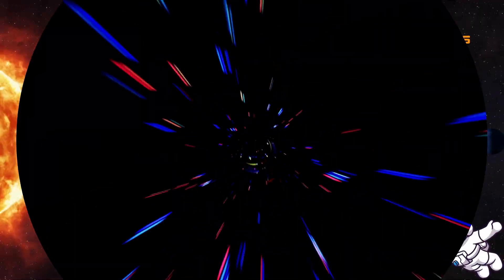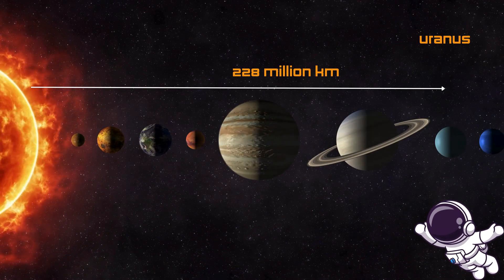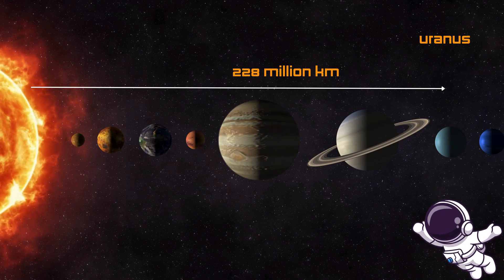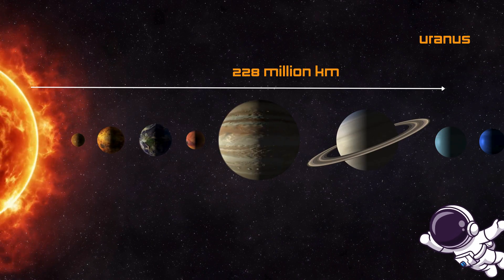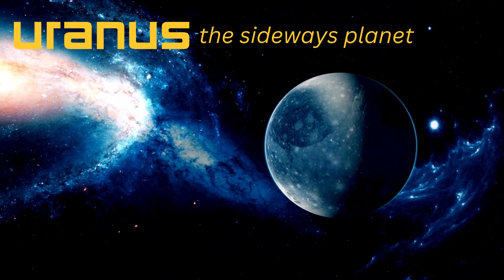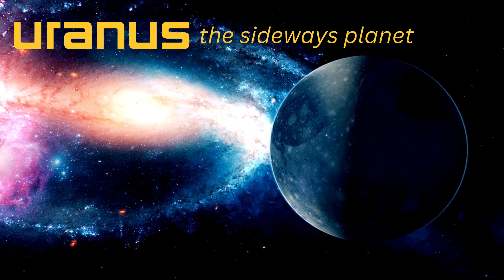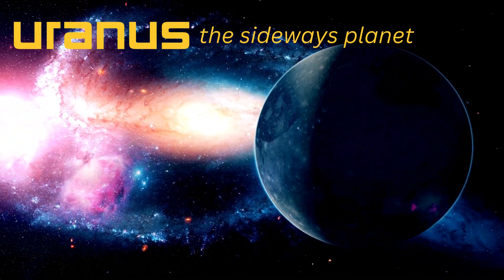Hold on tight. We're heading to Uranus. This planet is about 1.8 billion miles, 2.9 billion kilometers from the sun. Uranus is special because it spins on its side. Imagine rolling a ball sideways around the sun. That's what Uranus does.